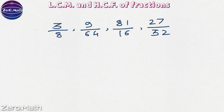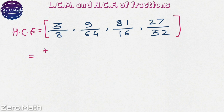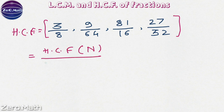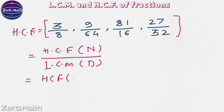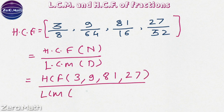Now let us figure out the HCF of the given fractions. The formula to find out the HCF is: HCF of numerators over LCM of denominators. So let us find out the HCF of the numerators — that is 3, 9, 81 and 27 — and the LCM of the denominators — that is 8, 64, 16 and 32.